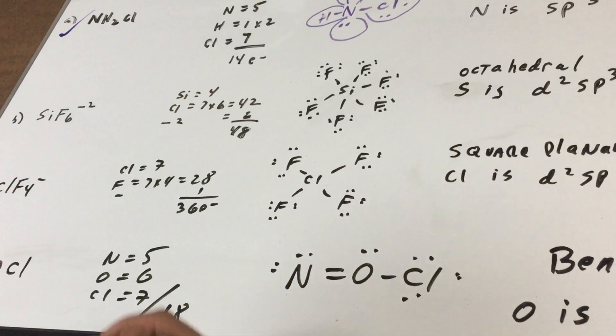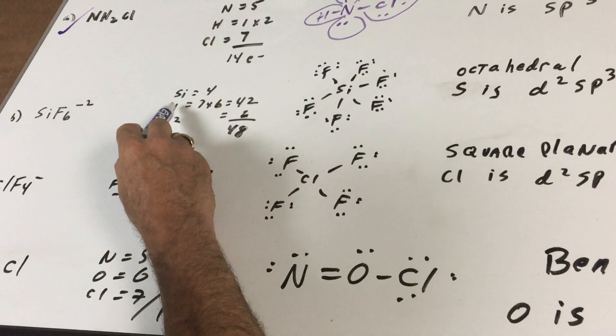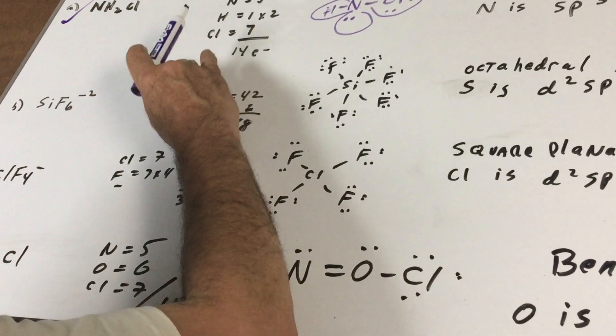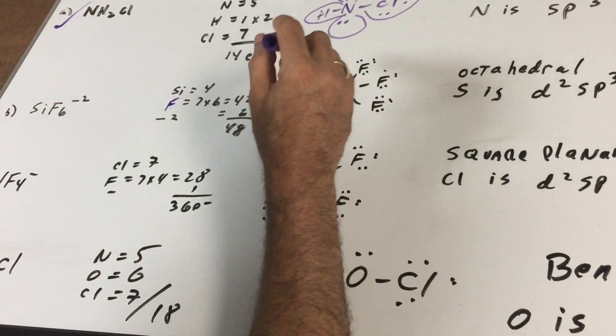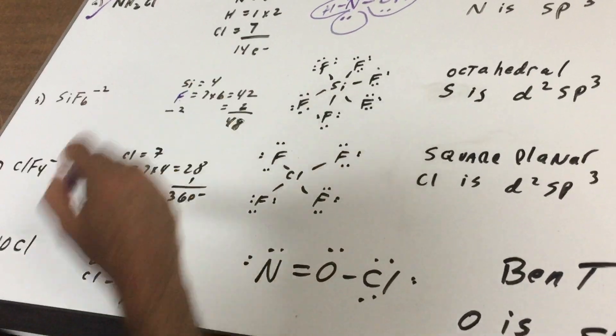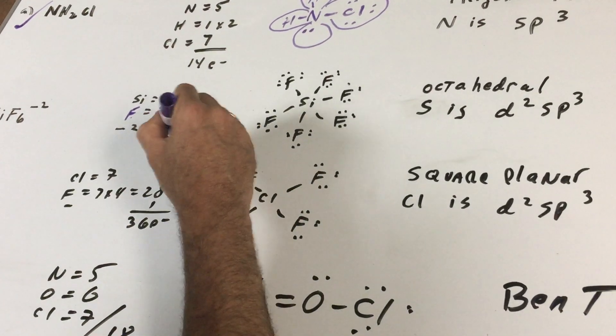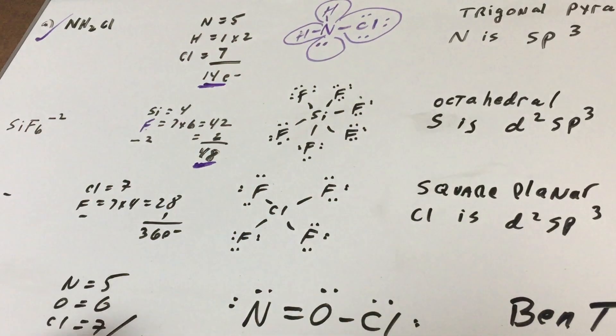SiF6-2. Let's do a count. Silicon is in group four. Fluorine is in group seven and there's six of them, that's 42, and the minus two gives me two more. This gives me a total of 48 valence electrons. That in itself could be a DAT question, so make sure you know how to get the valence electrons.